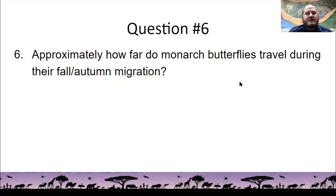And question number six. Approximately how far do monarch butterflies travel during their fall or autumn migration? And in this case, it's also a number, and if your number is within 500 miles of the actual number, you'll get credit. But if it's within 500 miles above or below.